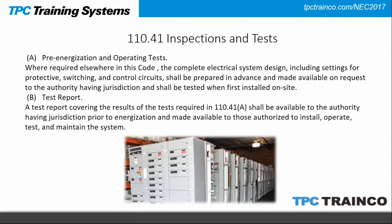A new section covers pre-energization and operating tests — essentially commissioning equipment. Where required elsewhere in the code, the complete electrical system design and settings for protective devices — ground fault settings, switching control circuits — must be prepared in advance and made available on request to the authority having jurisdiction. The system must be tested when first installed on site, and a report covering the results must be made available to the AHJ. This ensures all settings are correct and safety is in everyone's mind.